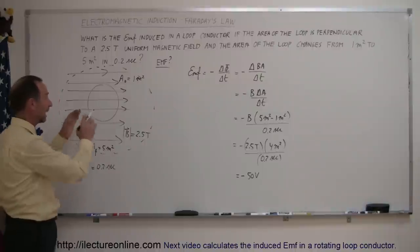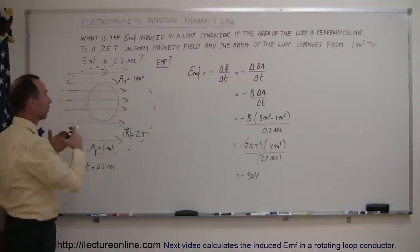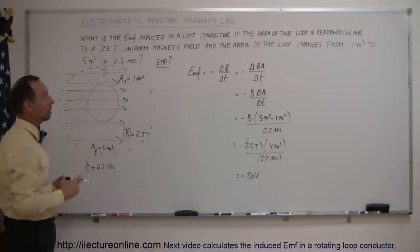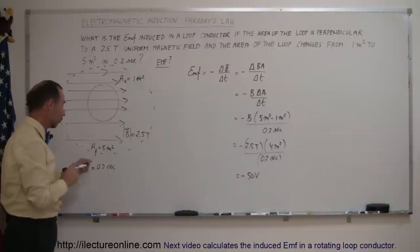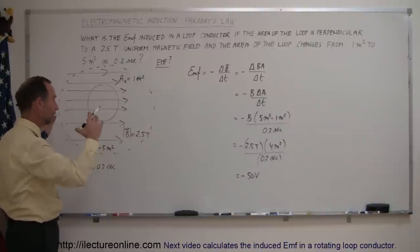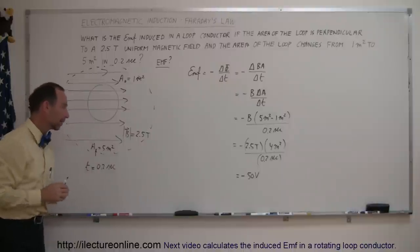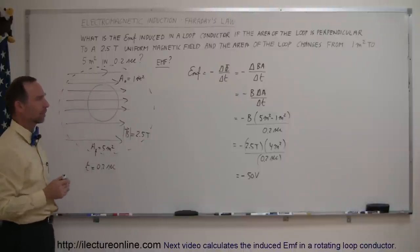So in this case, the EMF induced in this conductor, which is changing in size from 1 square meter to 5 square meters, you'll have an EMF induced of 50 volts for a period of 0.2 seconds. It's a lot of volts, of course, that's a very quick change of the area with the magnetic field being fairly strong.